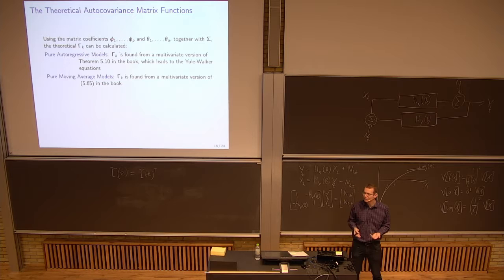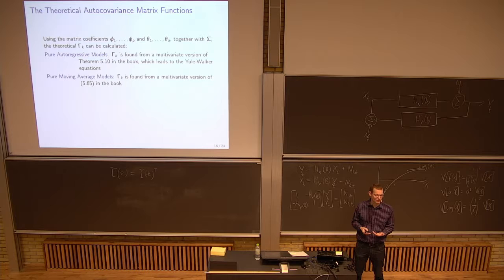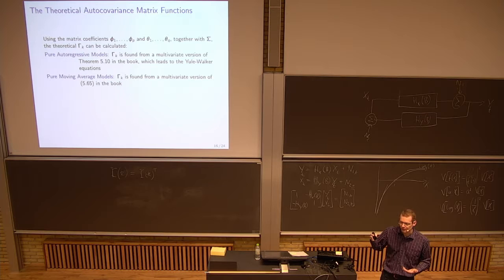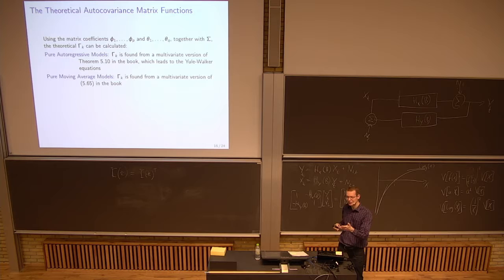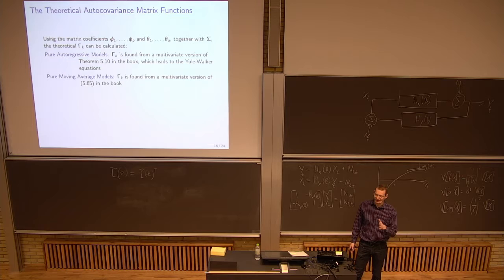For the moving average model, what would you look at there for the autocovariance? If you have a model of order q, what would you see? You would see non-zero elements up to q and then zero. Exactly. When you have a true model, you would say they are zero after, when you go to orders higher than q. And non-zero below q. If you do it from data, you would say significant or not significant.